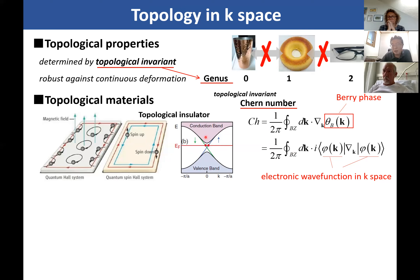Several such topological properties have been found in solid-state physics. The most famous is the topological insulator — insulating in the bulk, but with a surface conducting channel appearing at the edge. This edge channel has transport determined by spin orientation: if you fix the spin, the transport direction is determined. This is a very interesting property.